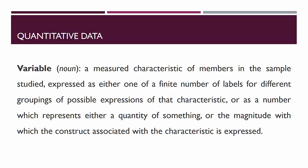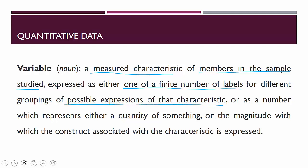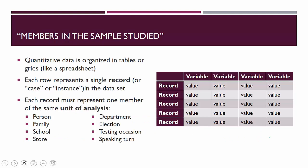There are phrases there that we need to unpack: it's a measured characteristic, we're looking at members in the sample study, one of a finite number of labels for possible expressions of that characteristic, or as a number which represents a quantity of something, or the magnitude with which a construct is expressed. Let's move into what those parts of the definition mean.